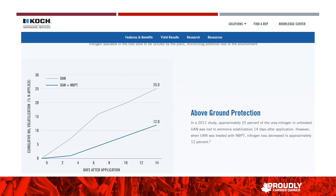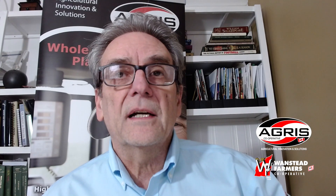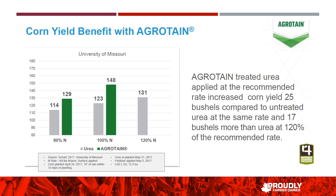When you look at treated versus untreated UAN, there's about a 53% reduction in volatilization loss on treated UAN. But remember, UAN is only 50% urea. So at 150 pounds actual N, with 50% urea, we're saving about 10 pounds of N on volatilization loss — which could be enough to produce 11 more bushels of corn. So it can be a significant contributor to yield.